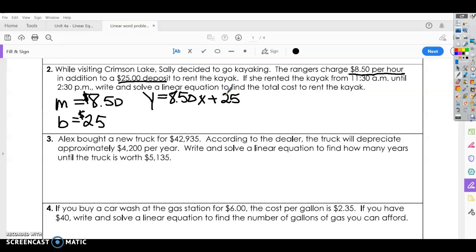Now it says write and solve a linear equation to find the total cost to rent the kayak. If we know that she rents the kayak from 11:30 to 2:30, that means she's renting the kayak for three hours. So if she's renting the kayak for three hours, is that our x or our y? We know that x is our independent variable, so we get to choose that. So we're choosing to rent it for three hours, and the amount we pay depends on how long we have the kayak.